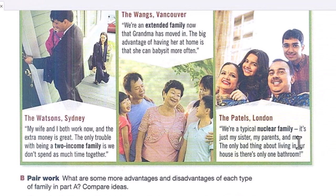The Paddles from London: 'We're a typical nuclear family — it's just my sister, my parents, and me. The only bad thing about living in our house is there's only one bathroom.' One bathroom is definitely not enough for a family, especially with teenagers.